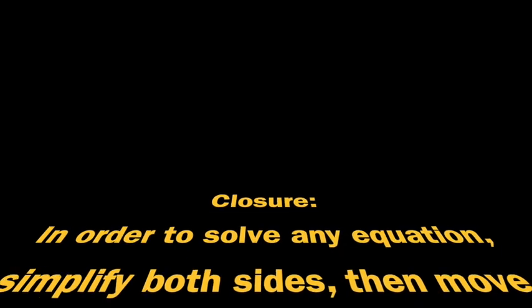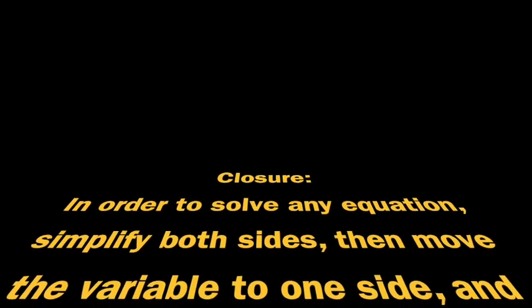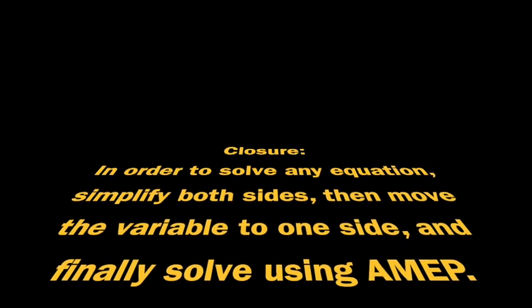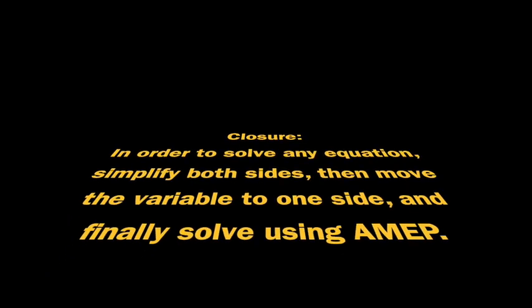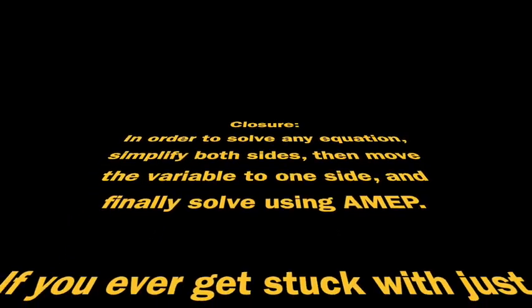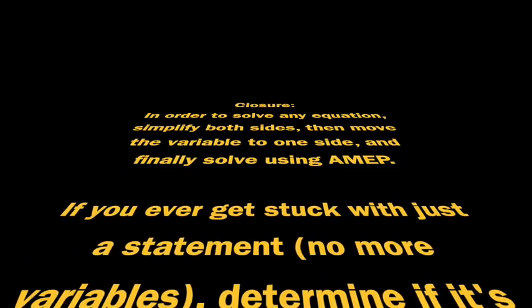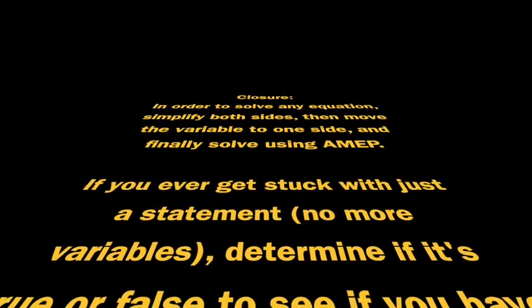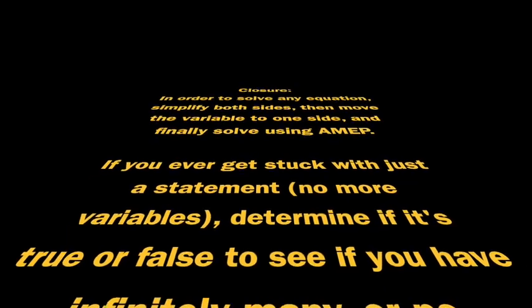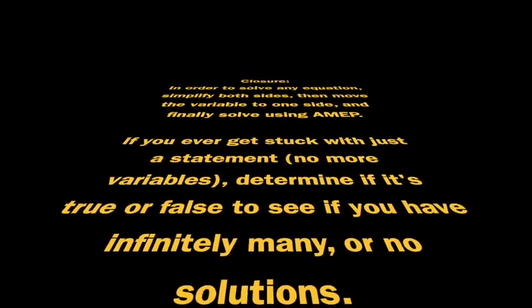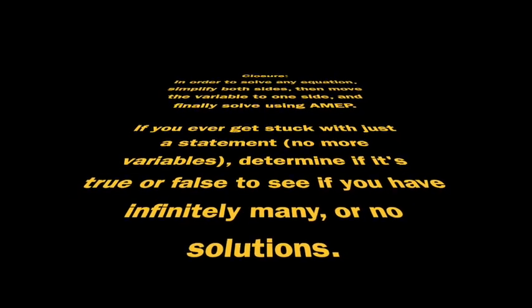To summarize this lesson, and really the first several lessons of this unit, in order to solve any equation, you need to simplify both sides first, then move the variable to one side, and then finally solve using AMEP. If you can skip one of those steps because they're not necessary, great. If you ever get stuck while solving, and there's no more variables left, that means you either have a true statement, which would mean infinite solutions, or a false statement, which would mean no solutions at all.